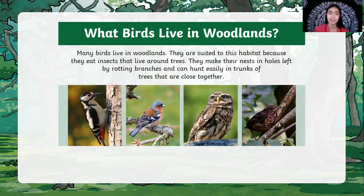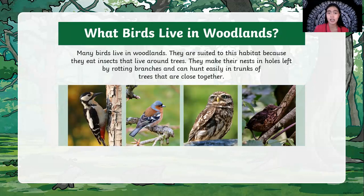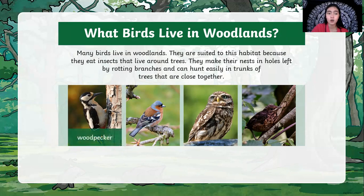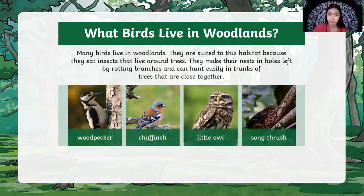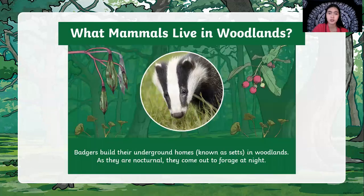What birds live in woodland? Many birds live in woodlands. They are suited to this habitat because they eat insects that live on trees. They make their nests in holes left by rotting branches and can hunt easily in trunks of trees that are close together. Some birds that live in the woodland include a woodpecker, chaffinch, little owl, and song thrush — though there are many more kinds of birds that live in woodlands.